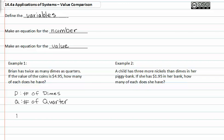So dimes equal two times the quarters, because he has more dimes than quarters. So to make it equal, we'd have to multiply the quarters by two to equal the dimes.